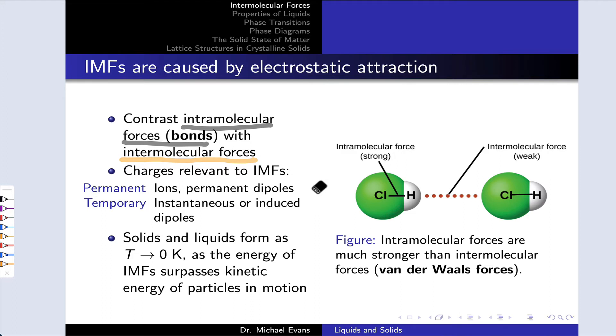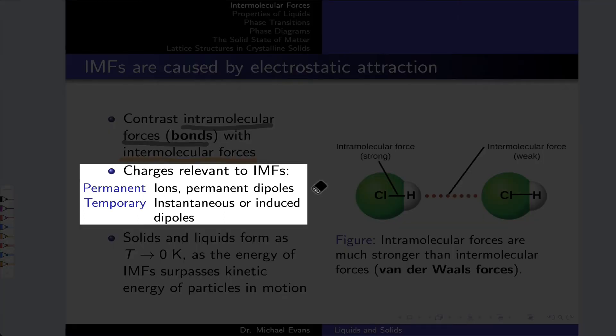And note that although we've already laid out this idea that IMFs are related to electrostatic attractions, the type of charge involved can either be permanent or temporary. So we can talk about permanent charges in ions, plus one, minus one, plus two, minus two, and partial charges in permanent dipoles,